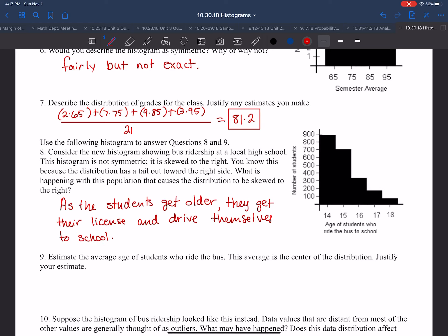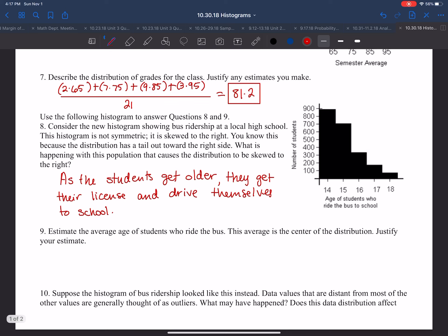Now, estimate the average age of students who ride the bus. This average is the center of the distribution. Justify your estimate. When we justify, our work is going to be our justification. If we look at 14, this is going to be an eyeball estimate because we're just looking at a graph. So it's not quite 900. I'm going to say 14 times about 880, plus 15 times about 700. This bar is at about 330. This bar is at about 180. And this bar is not quite 100. I'm going to say about 90. Again, these numbers are just estimates.